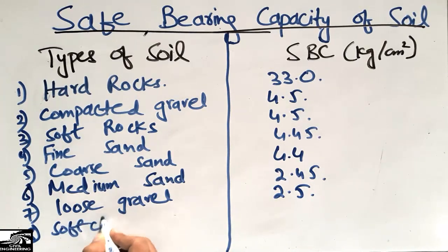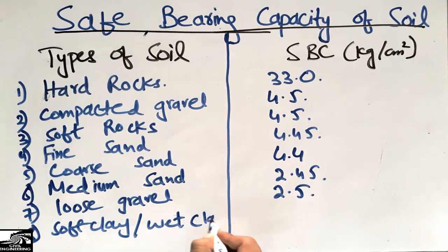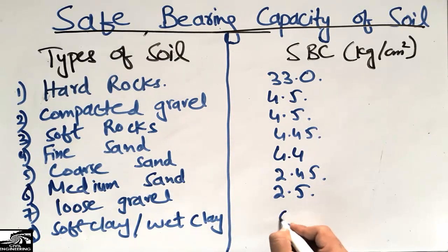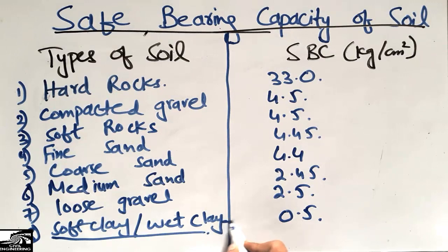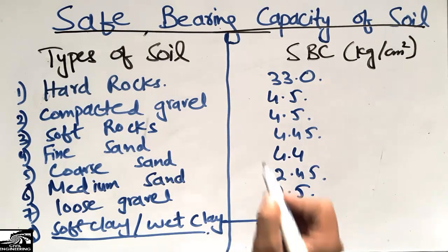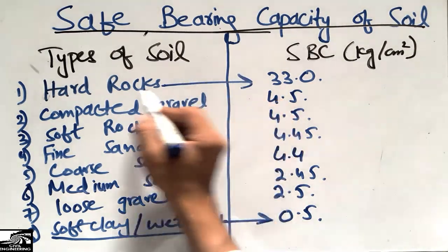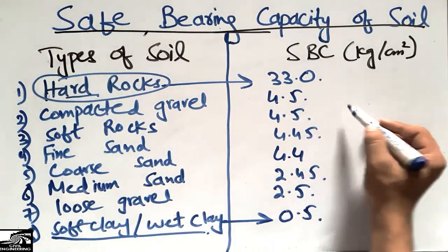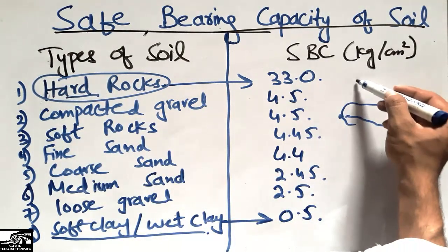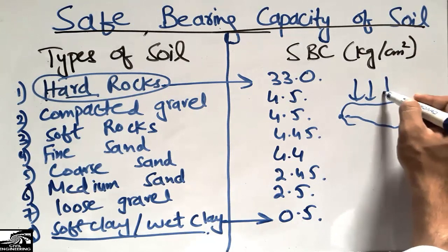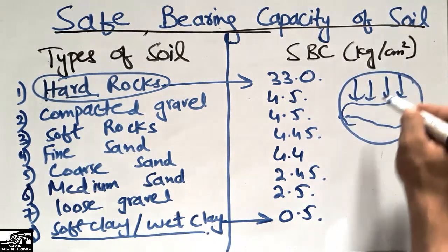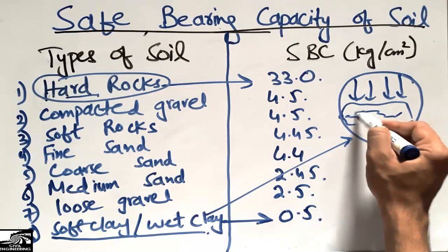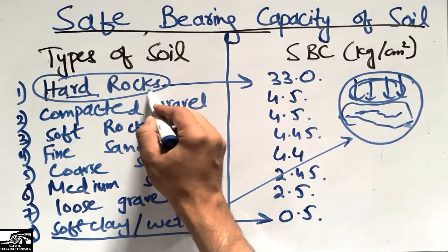The last type is soft clay, wet clay, or muddy clay. These have the least bearing capacity of 0.5 kilogram per centimeter square. The highest bearing capacity belongs to hard rock, which can support much more load when a structure is constructed on it. Soft clay cannot support as much load as compared to hard rocks.